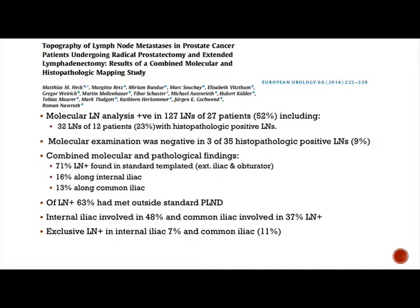The internal iliac was involved in 48% and the common iliac in 37% of positive nodes. Coming back to the question about skip lesions, 7% of patients had positive nodes only in the internal iliac and 11% only in the common iliac — suggesting skip metastases are a real phenomenon.